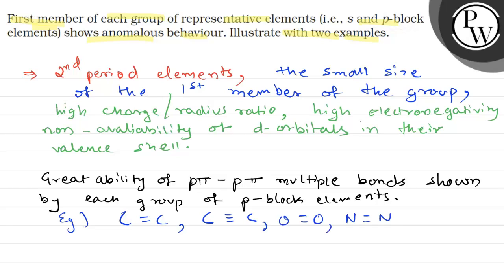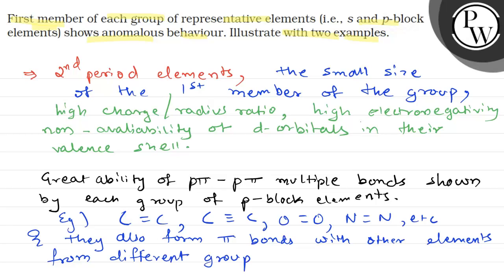And second period elements also form pi bonds with other elements from different groups. For example, C double bond O, N double bond O, C double bond N, etc.